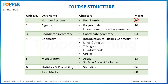Algebra will be having 2 chapters: Polynomials and Linear Equations in 2 Variables, and it will be of a total of 20 marks. So the 2 chapters, that is Polynomials and Linear Equations in 2 Variables, together will be of total 20 marks.